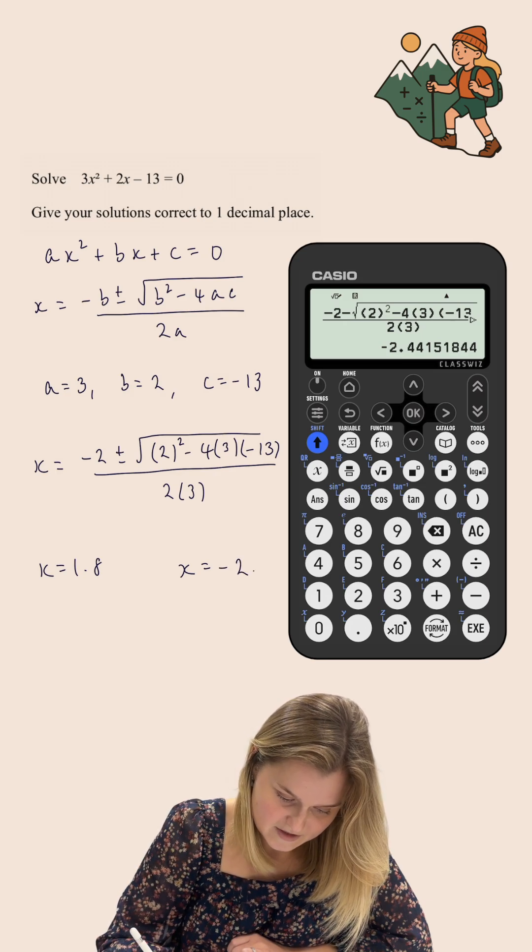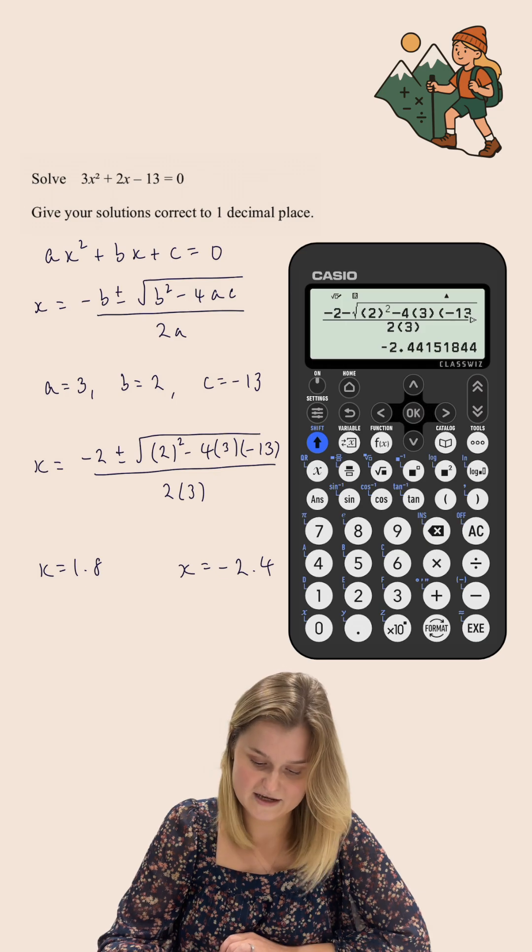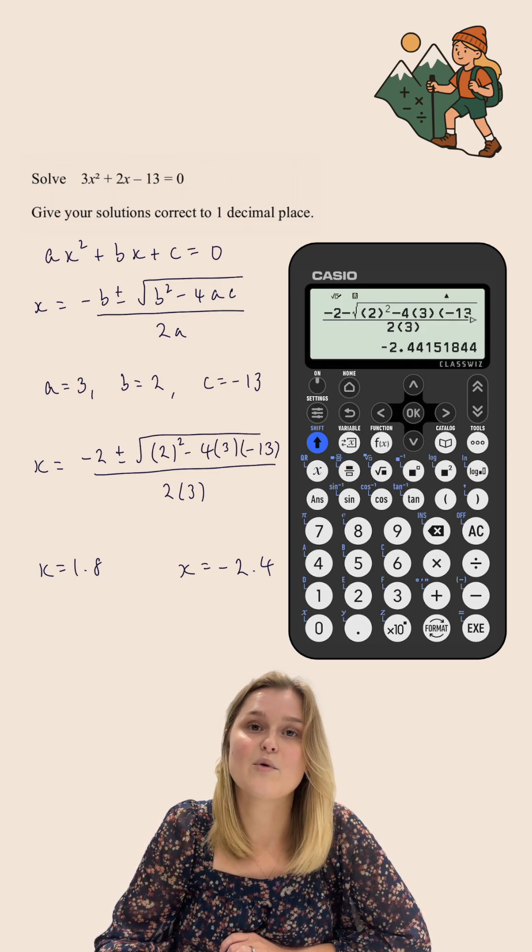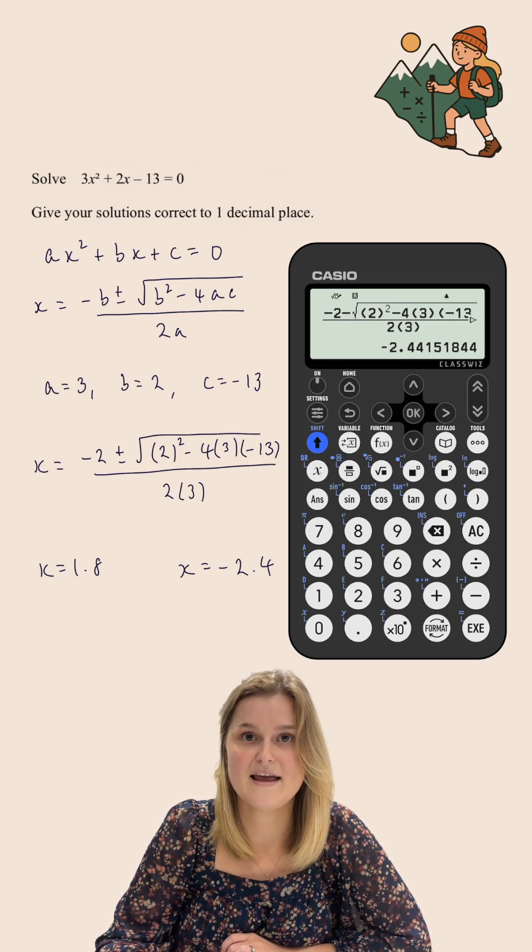I get my second solution which is -2.4. So I've got my two solutions for x: the first one is 1.8 and the second one is -2.4, both to one decimal place.